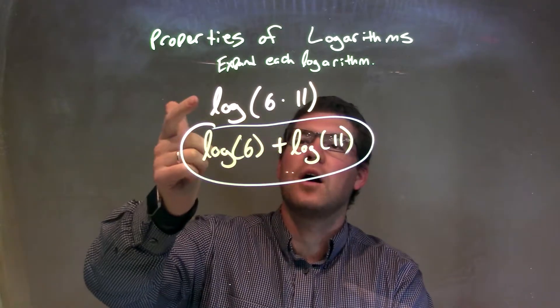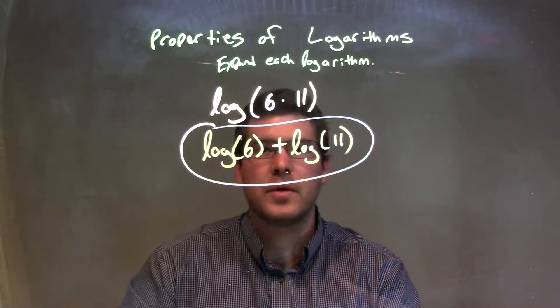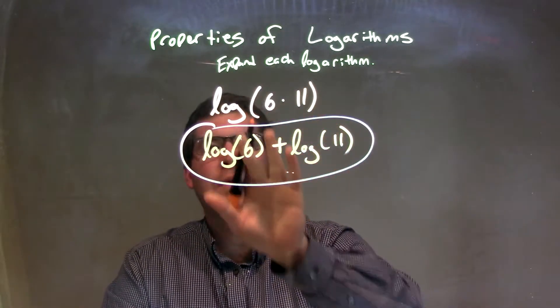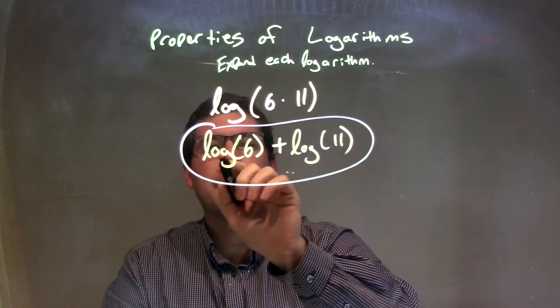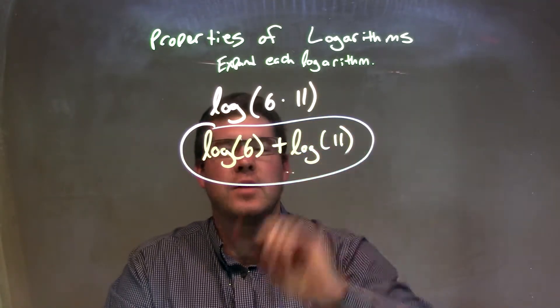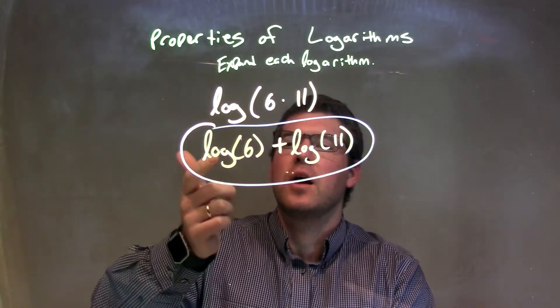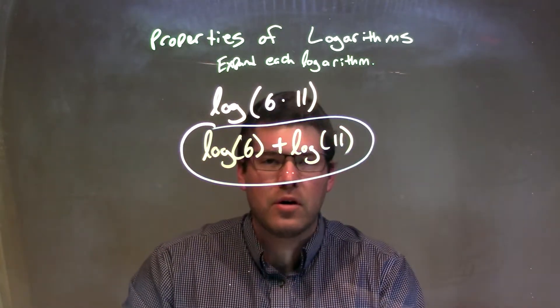Let's recap. We're given log of 6 times 11. If it's multiplication on the inside, we can separate that to two different logs and put addition between them, giving us our final answer, expanded version: log of 6 plus log of 11.